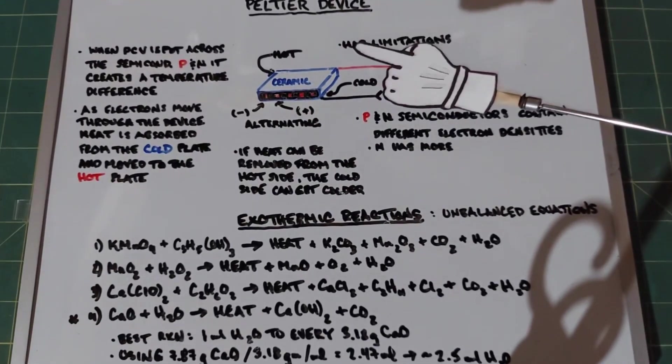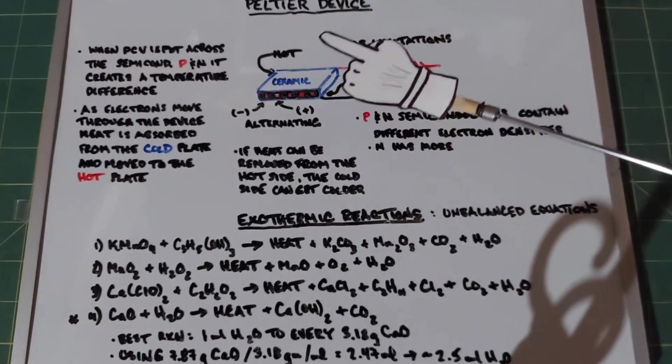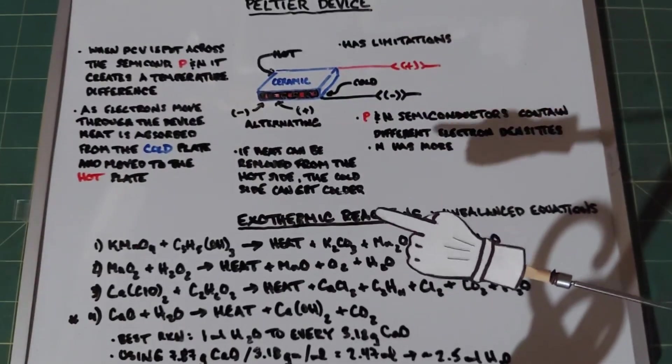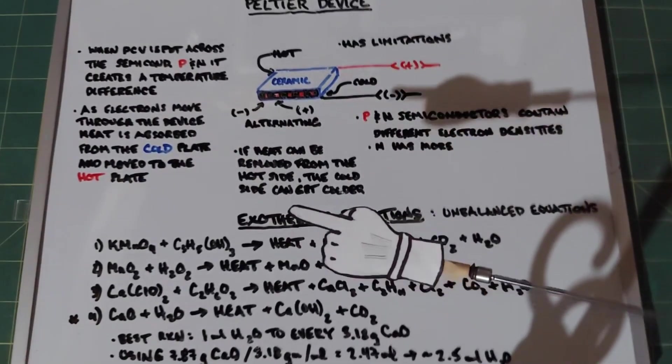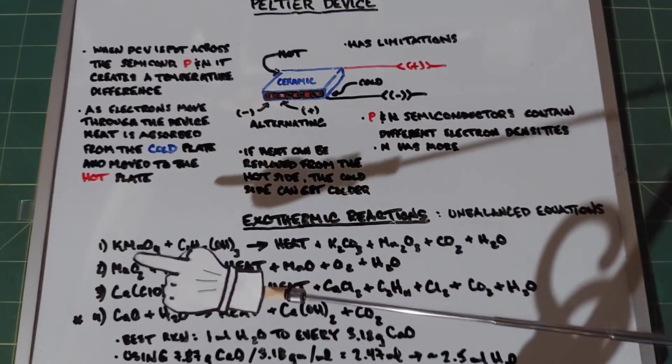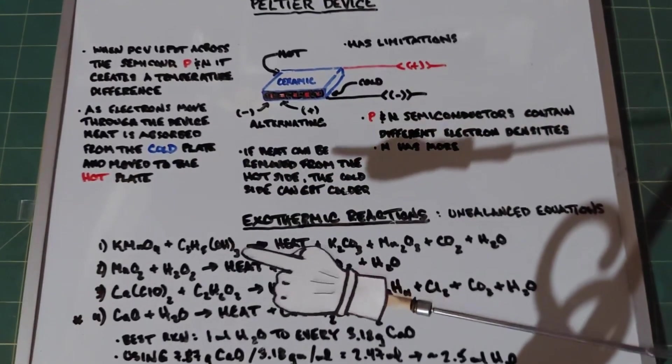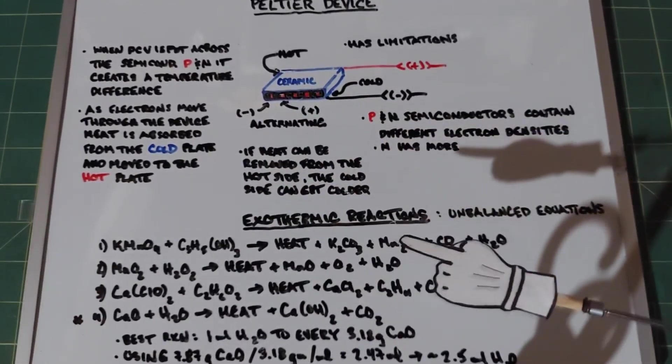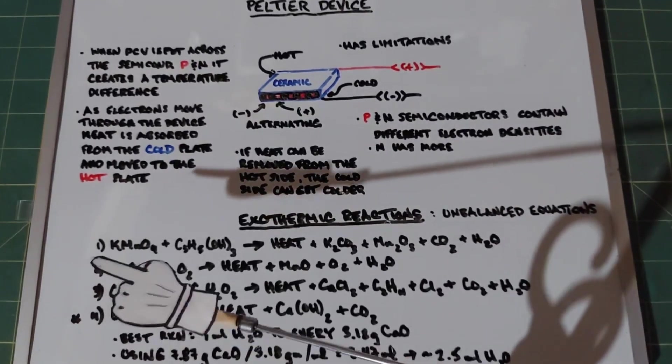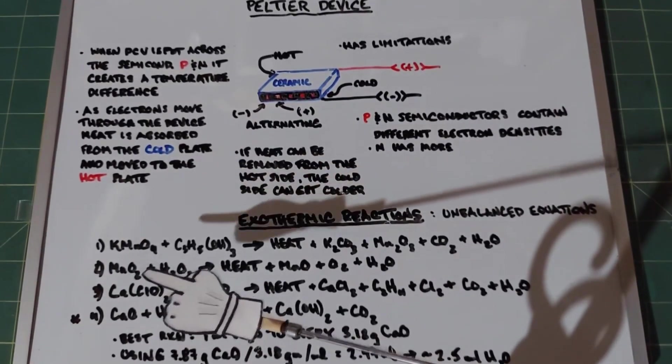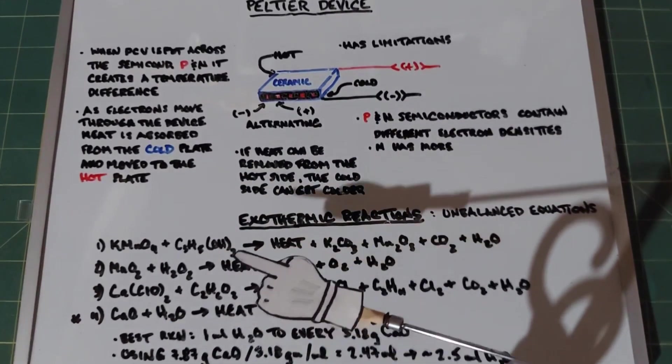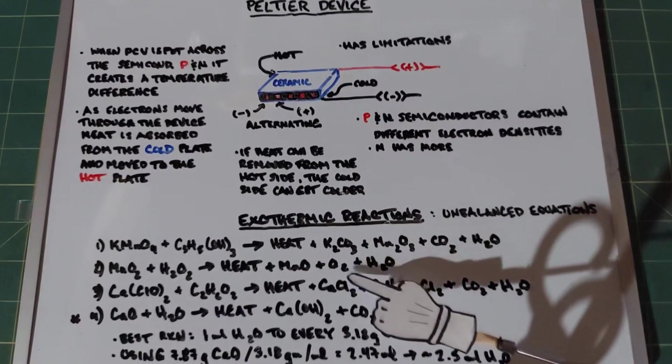Since we're talking about exothermic reactions, I wanted to go over some other exothermic reactions which I'll perform during this video. Note that none of these equations are balanced properly. First one's well known: potassium permanganate and glycerin yields heat, potassium carbonate, manganese 3 oxide, CO2, and H2O. The second is manganese dioxide, which you can get from old batteries, and hydrogen peroxide, which yields heat, manganese 2 oxide, oxygen, and water.